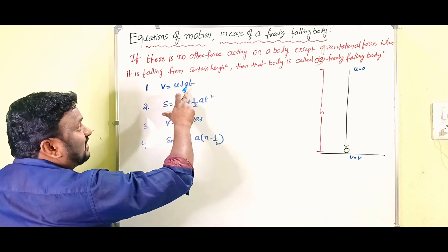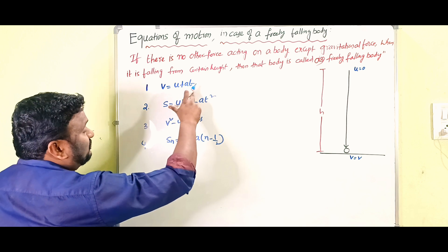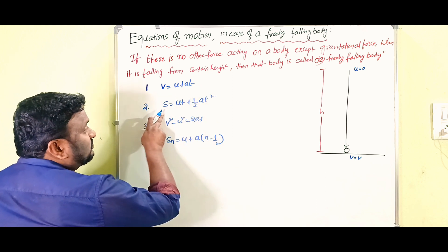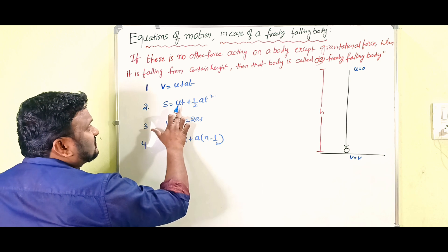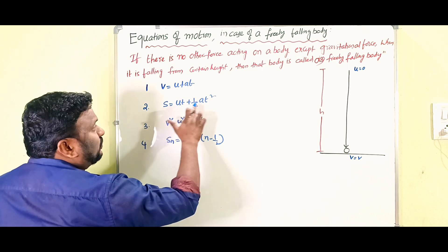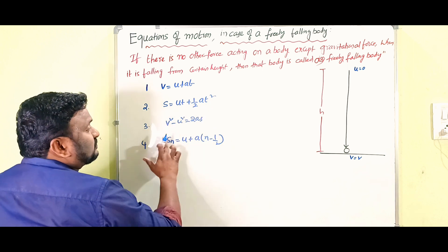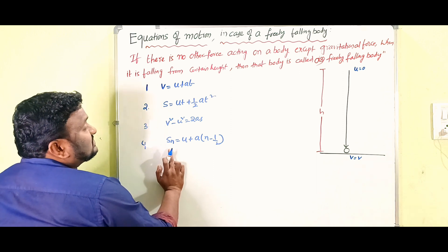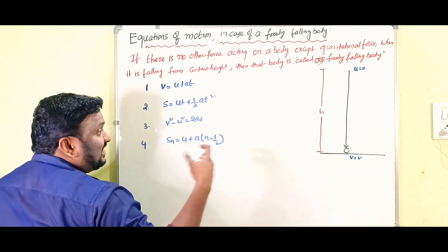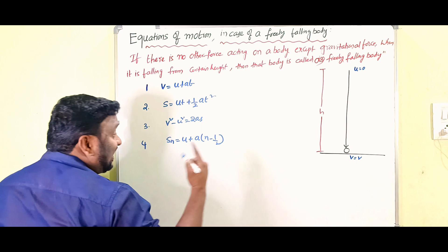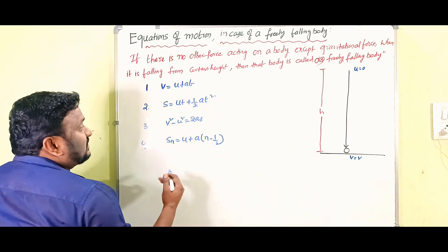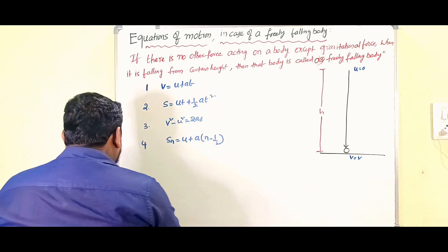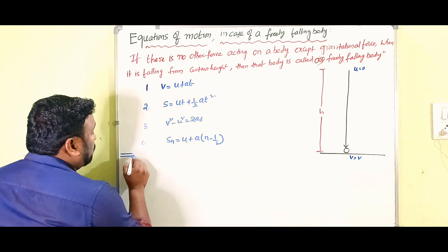Here, v is the final velocity, u is the initial velocity, a is acceleration, t is time, s is distance travelled, and Sn is the distance travelled in the nth second — where n means the number of seconds.